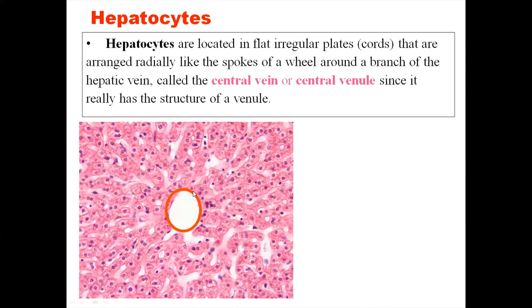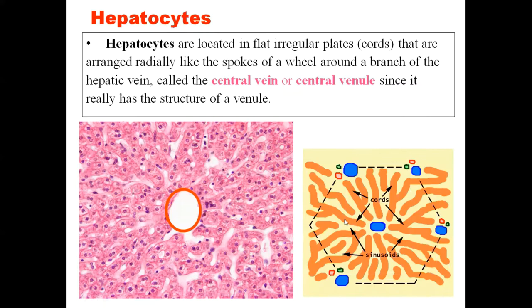Hepatocytes are arranged in flat irregular plates or cords arranged radially, like spokes of a wheel, around a branch of the hepatic vein called the central vein or terminal hepatic venule. The cords of hepatocytes radiate and some may be binucleated, with well-defined centrally placed nuclei. In between the cords we see a light-stained area lined by endothelial cells — these are sinusoids — and this sinusoidal space opens into the central vein.